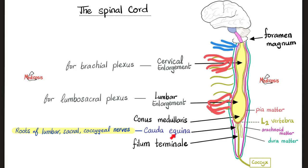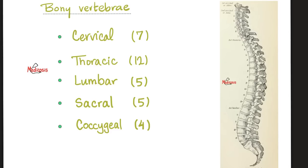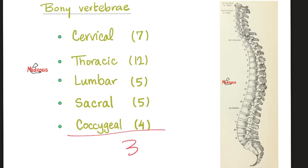What does equine mean? Horse. Bovine means cow, swine means pig, and canine means dog. The bony vertebrae total 33: seven cervical, 12 thoracic, five lumbar, five sacral, and four coccygeal. Seven plus 12 is 19, plus five is 24, plus another five is 29, and four more is 33 — 33 bony vertebrae.